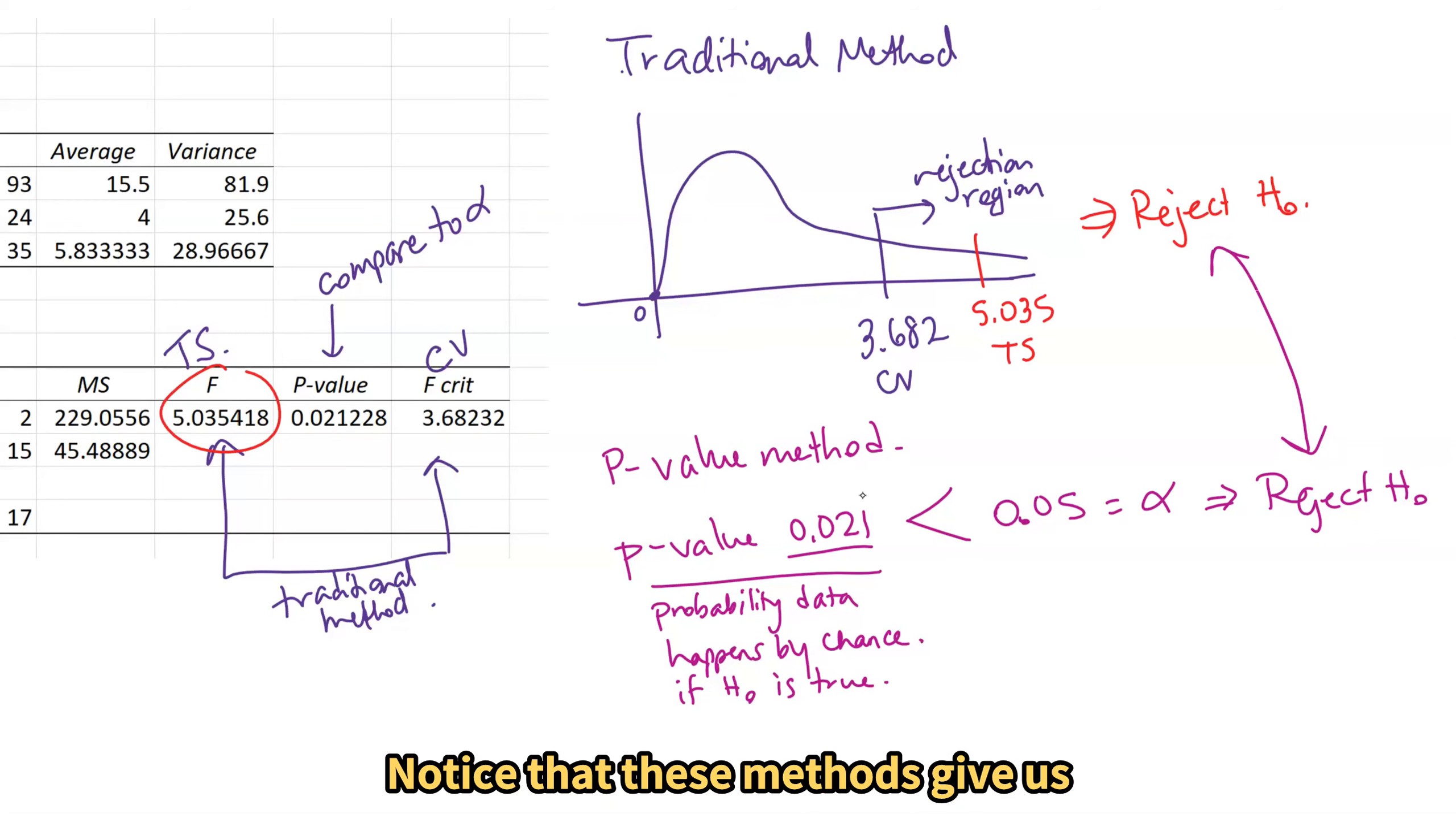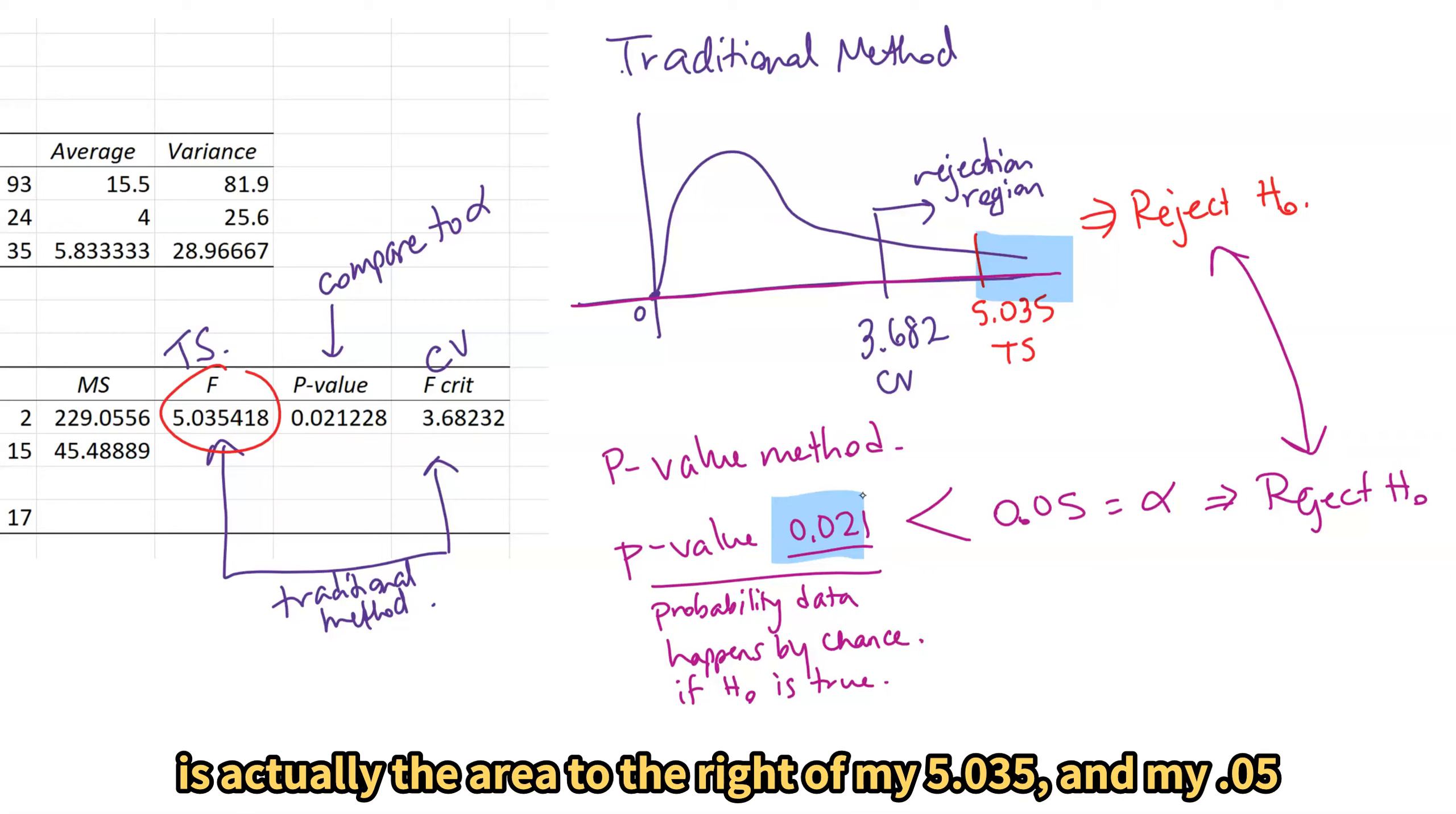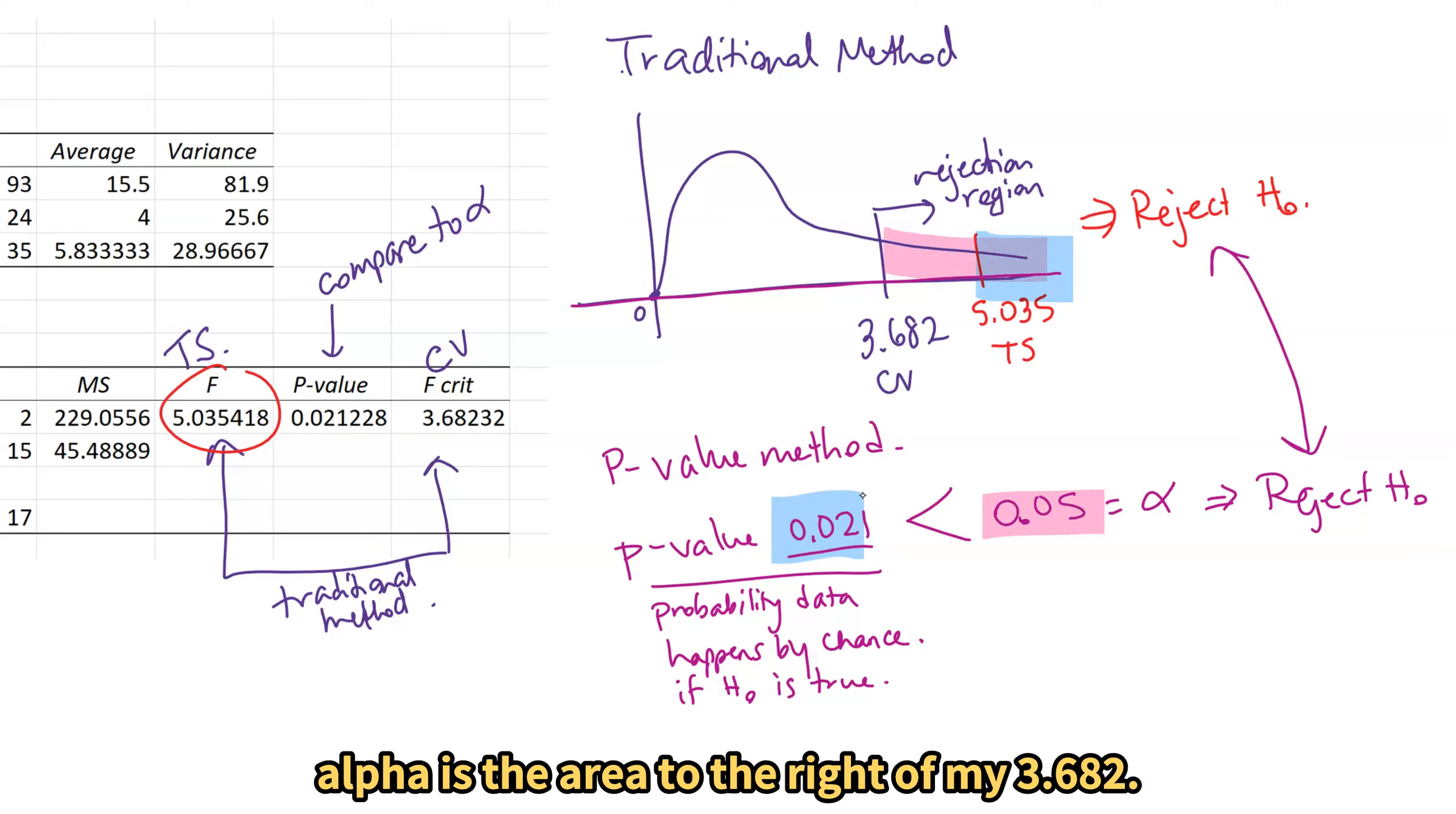Notice that these methods give us the exact same conclusion and they will every single time. Traditional method is comparing values along the x axis. The p value method is comparing areas. So the p value 0.021 is actually the area to the right of my 5.035 and my 0.05 alpha is the area to the right of my 3.682. And so no matter what, we are always going to get the same conclusion using either method. You only have to do one method. Do the one that makes the most sense for you.